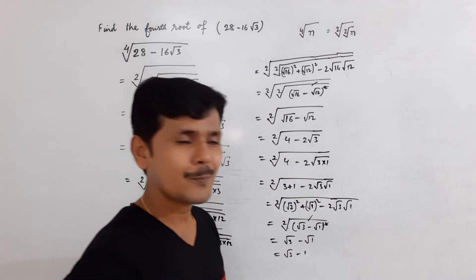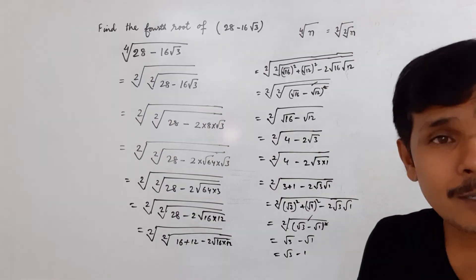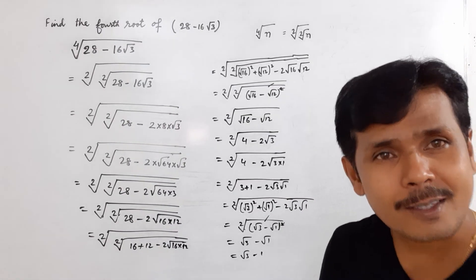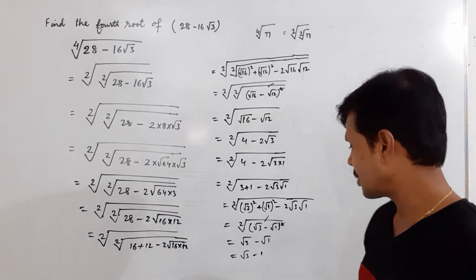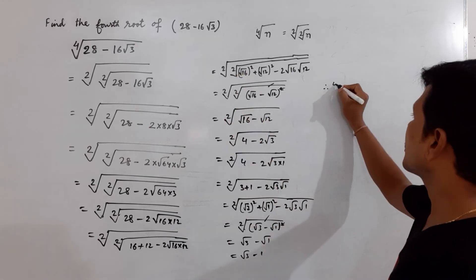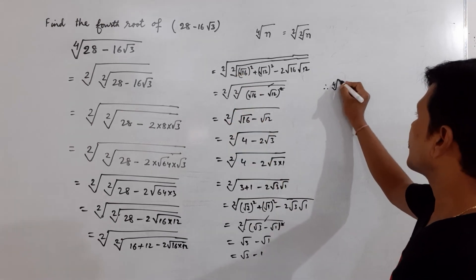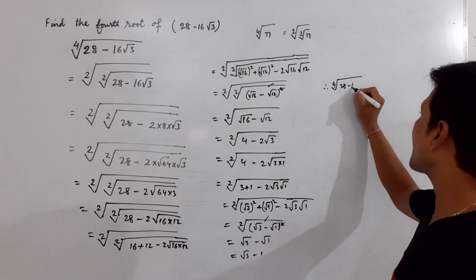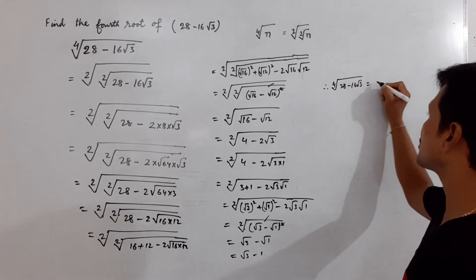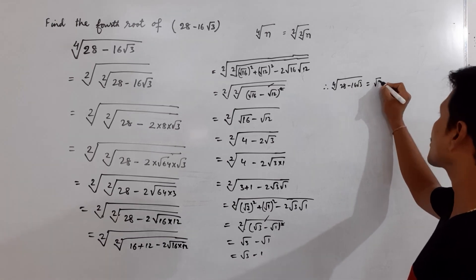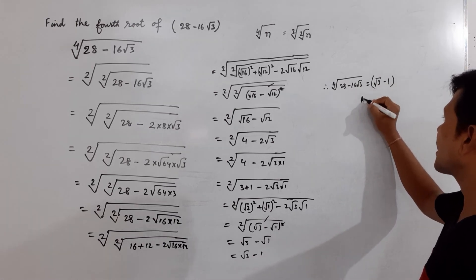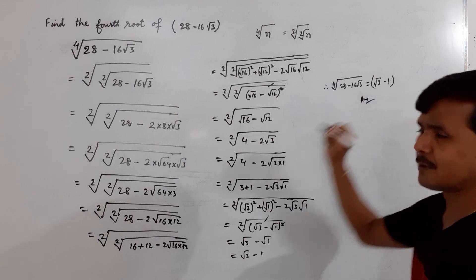I want to share the conclusion: the fourth root of 28 minus 16 times root 3 is equal to square root of 3 minus 1. This is our answer.